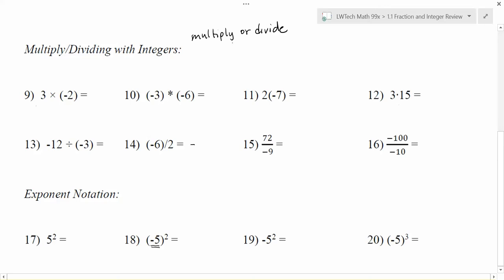If I am multiplying or dividing two things that have the same sign, my answer is always going to end up being positive. And if I'm going to multiply or divide two things with different signs, then my answer is always going to be negative.